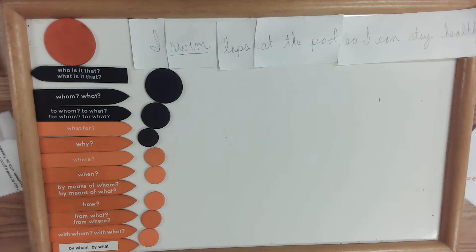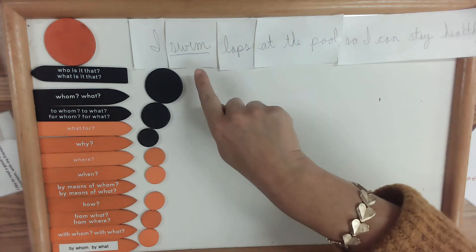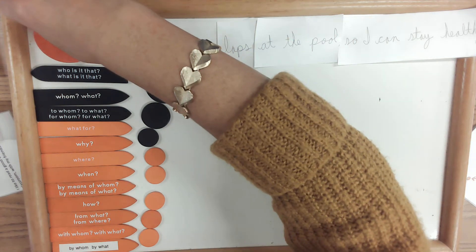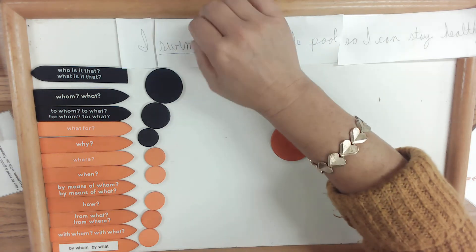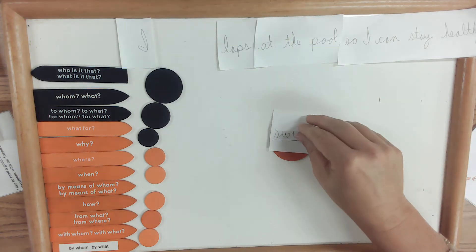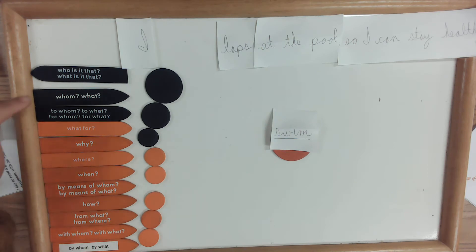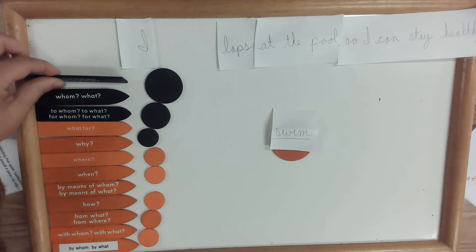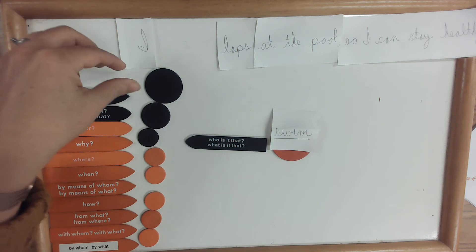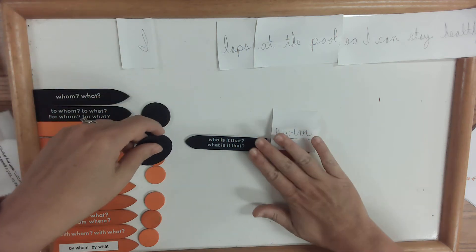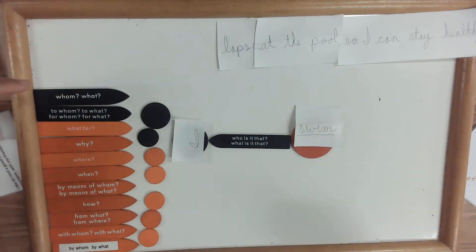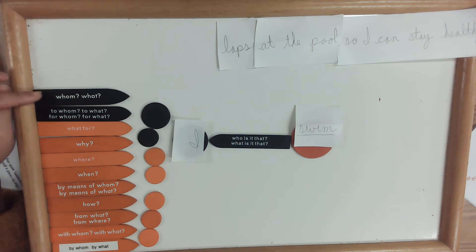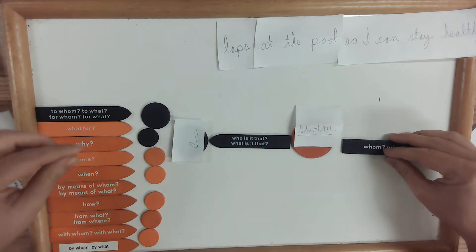The same thing you do every time with sentence analysis: you underline and cut out the main verb in a sentence. I see that the word swim is my main verb — that is the action, it is what is being done. Next up, who is it that swims? Well, I swim. What do I swim? I swim laps.